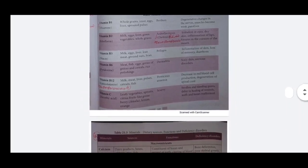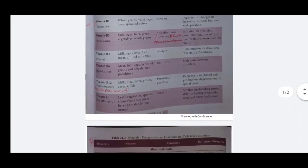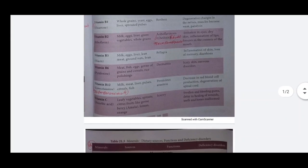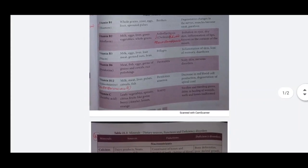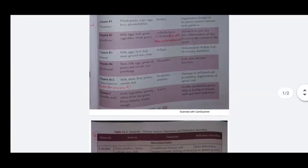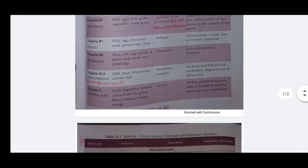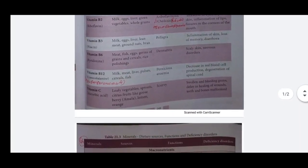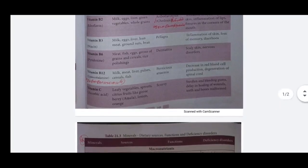Vitamin C - ascorbic acid. Sources: leafy vegetables, sprouts, citrus fruits like gooseberry (amla), lemon, orange. Deficiency disorder: scurvy. Symptoms: swollen and bleeding gums, delay in healing of wounds, teeth and bones malformed.